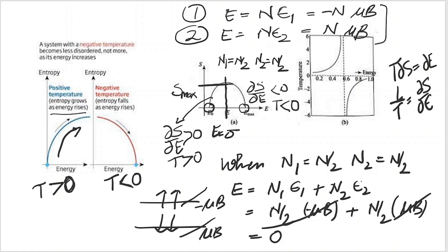As we move towards negative temperature, the entropy is decreasing, meaning the system is becoming less disordered as energy increases. This is the inverse of what we usually see in daily life, where increasing energy increases disorder. But here, as we increase the energy, the disorderness is decreasing — that's why we term this region of falling entropy as negative temperature.